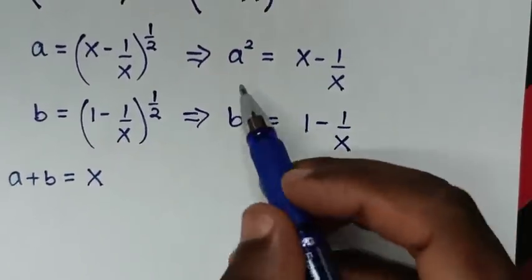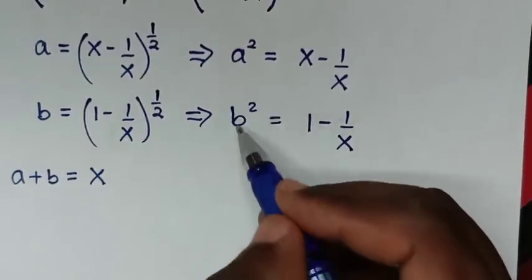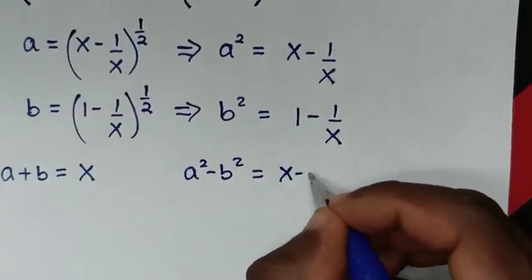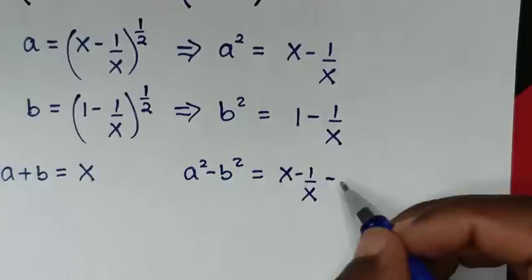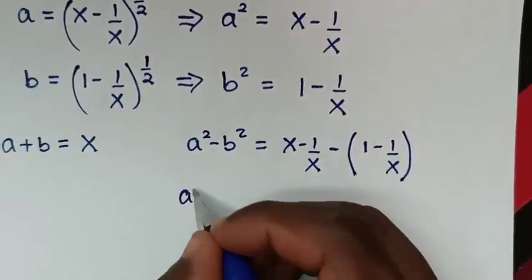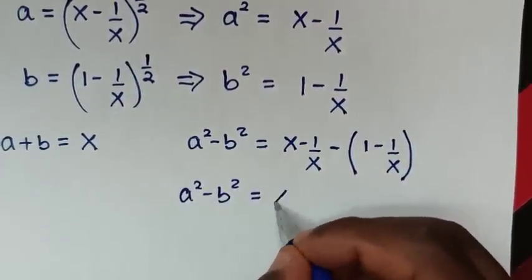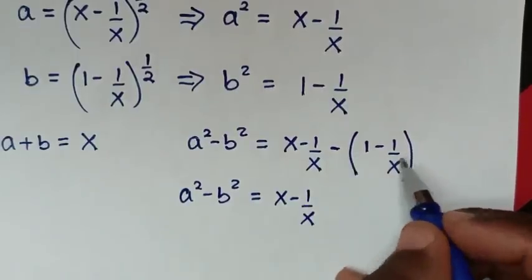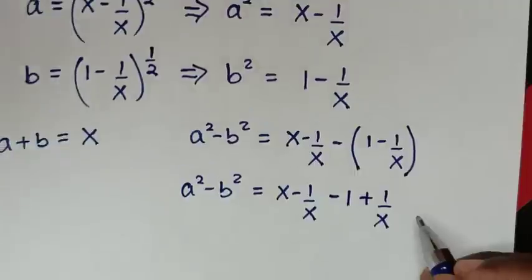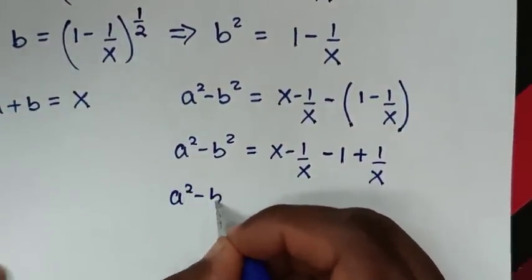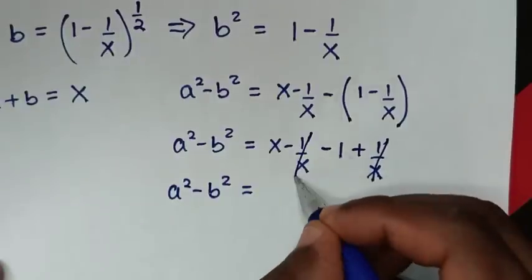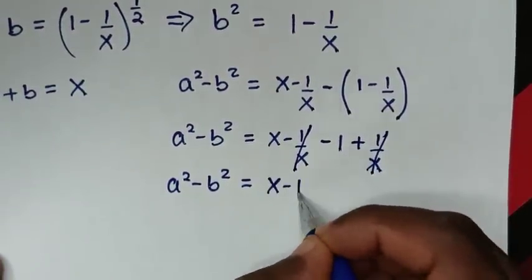We will now take a squared minus b squared, which is a difference of squares. So a squared minus b squared equals (x minus 1 over x) minus (1 minus 1 over x). Opening the bracket: x minus 1 over x minus 1 plus 1 over x. The 1 over x terms cancel, leaving x minus 1.